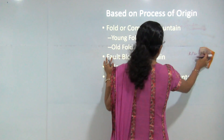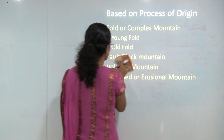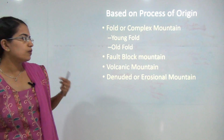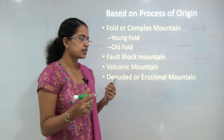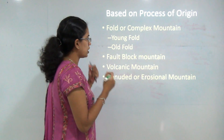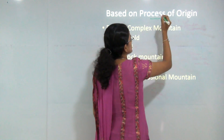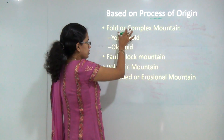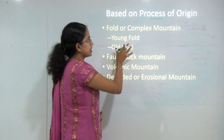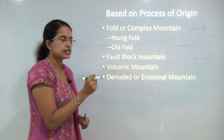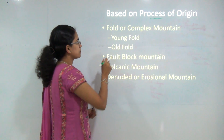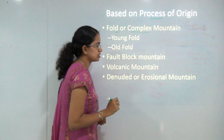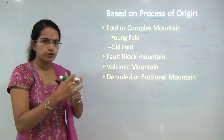The last classification was based on period of origin — how rocks originated and during which geological period. This classification is based on process of origin — that is, how mountains originated. There are four basic kinds of mountain systems based on process of origin. The first and most common would be the fold and complex mountain structure, which are formed due to compressive forces.